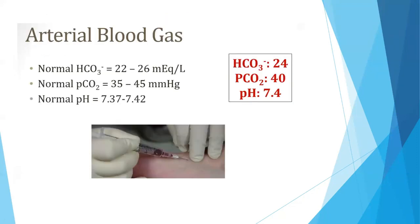For arterial blood gas, the normal bicarbonate is 22 to 26 — for reference we use 24. The normal pCO2 is 35 to 45 — for reference we take 40. And the normal pH is 7.37 to 7.42.